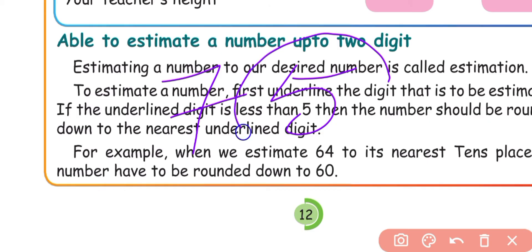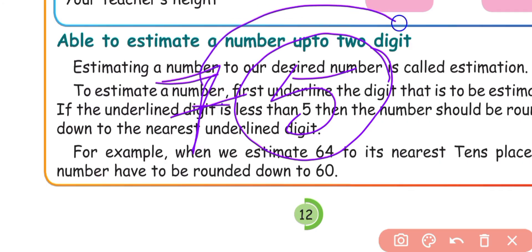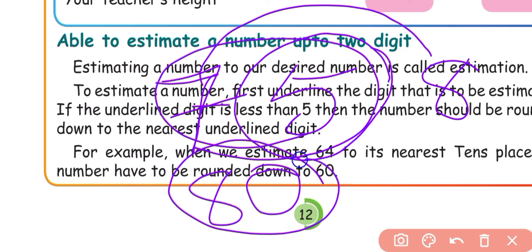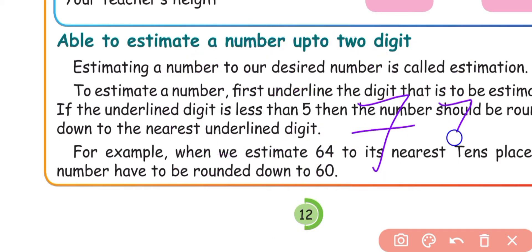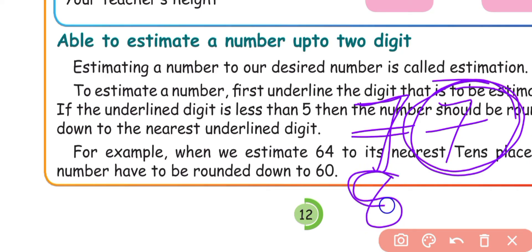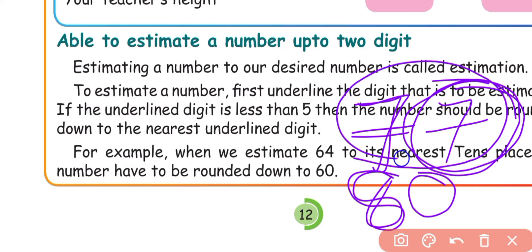Example: 75 — the ones place is 5. Since 5 equals 5, round up: 7 tens becomes 8 tens, so 75 to the nearest tens place is 80. Next, 77 — the ones place is 7, which is bigger than 5, so round up: 7 tens becomes 8 tens, giving 80. So 77 rounded to the nearest tens place is 80.